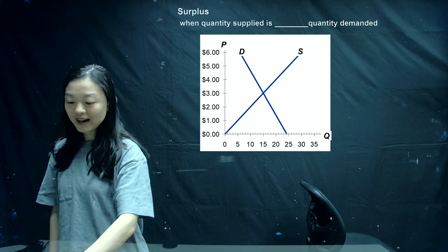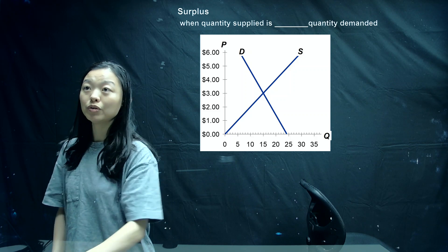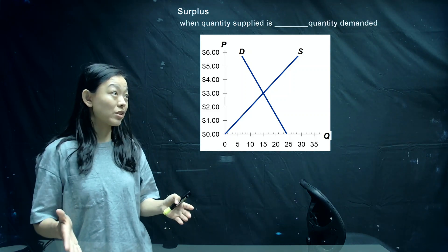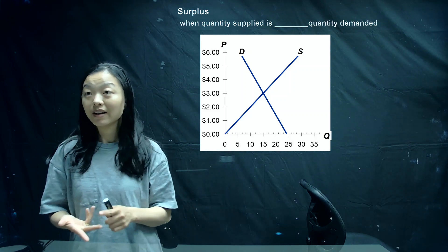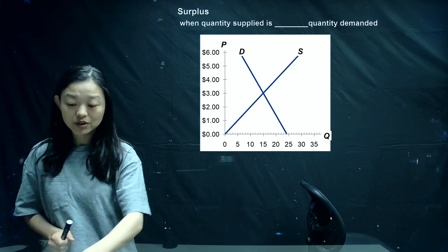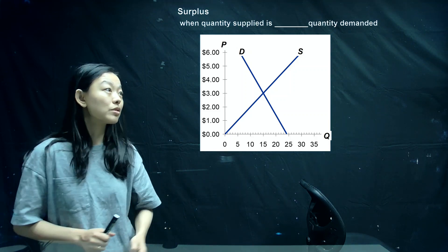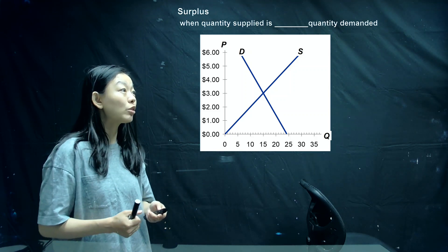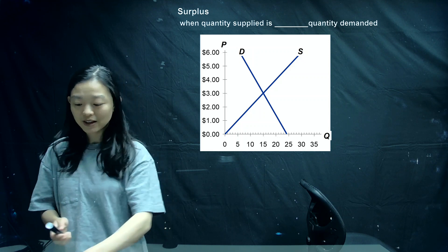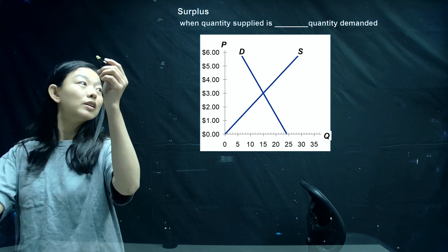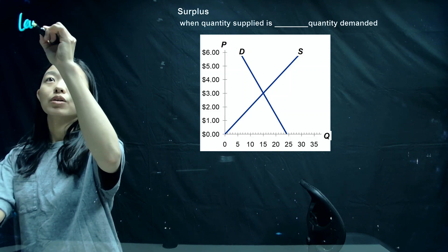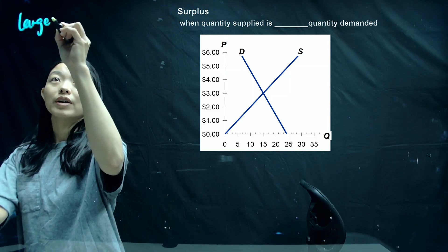Now let's look at two common economic situations. One is called surplus, and another one is called shortage. For surplus, it means when quantity supplied is larger than quantity demanded.